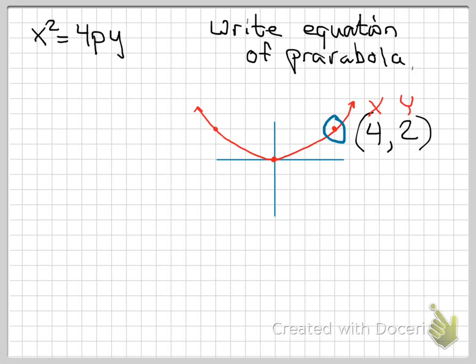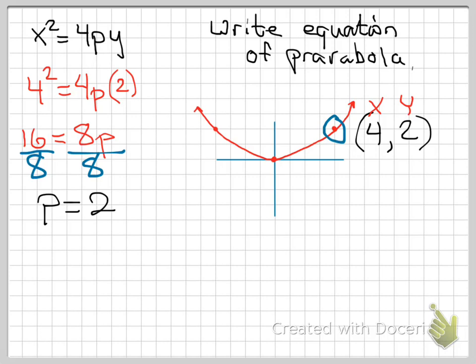And we could just plug those in. So that would give us 4 squared equals 4p times y, which would be 2. So 16 equals 8p. Divide both sides by 8. And we find that p equals 2.